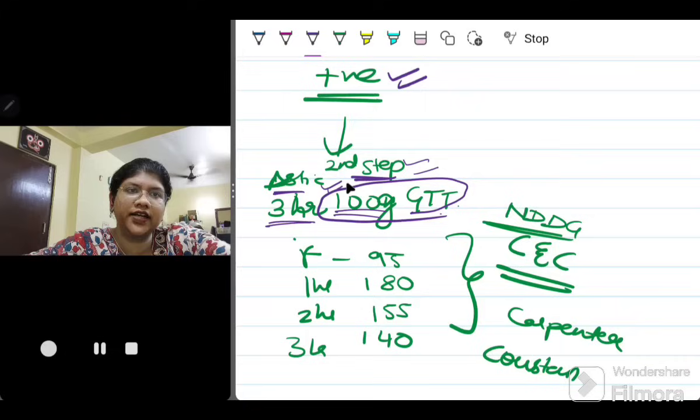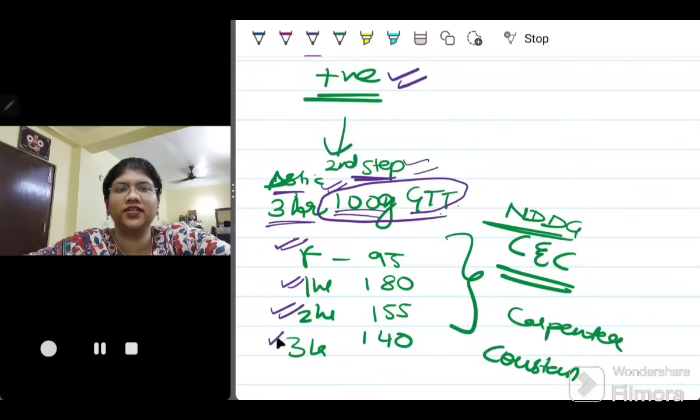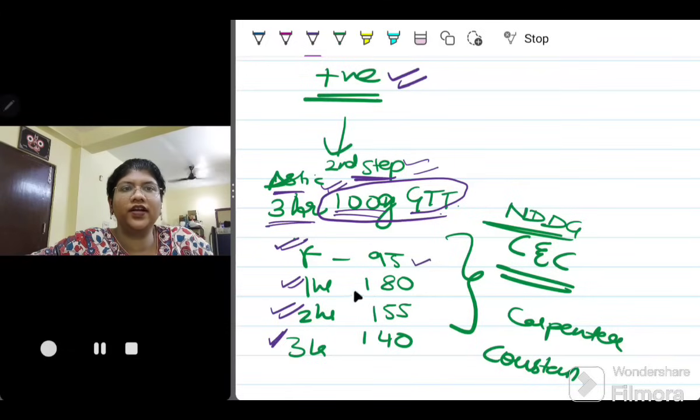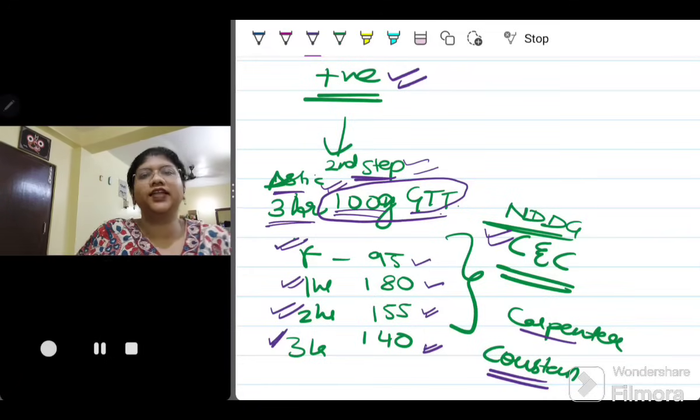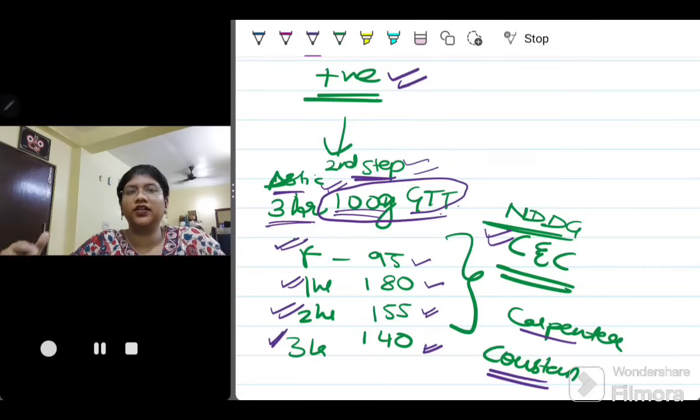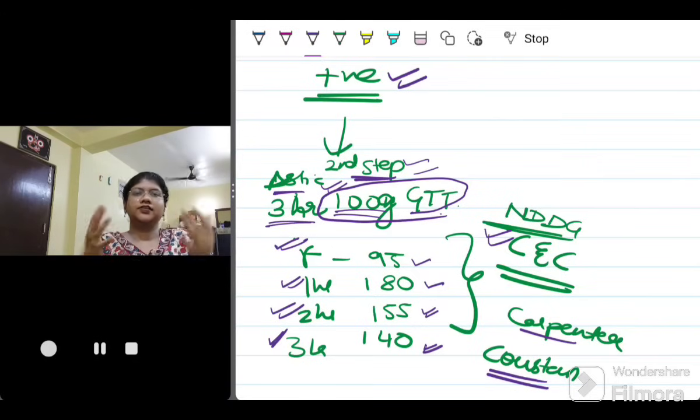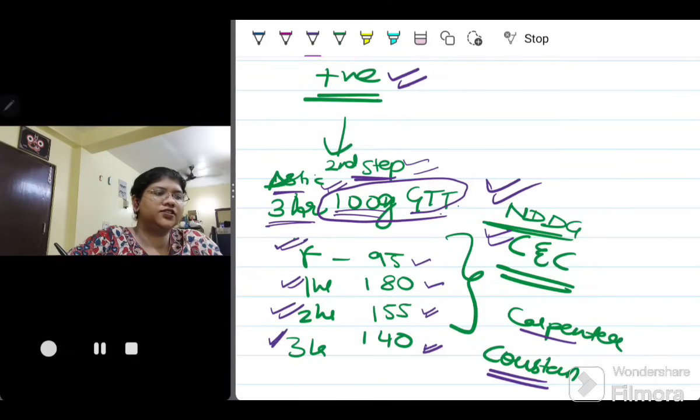The second step is a 3 hour 100 gram glucose tolerance test. You are going to give her 100 grams of glucose. Then you check fasting, 1 hour, 2 hours, and 3 hours after glucose. Fasting cutoff is 95, 1 hour is 180, 2 hours is 155, 3 hours is 140. This cutoff you have to remember. This is the same cutoff that has been given by the Carpenter and Couston criteria also. They tell you have to use 100 grams of glucose and get these 4 values. The same cutoff has also been given by the NDDG, National Diabetes Data Group.